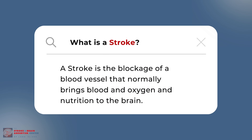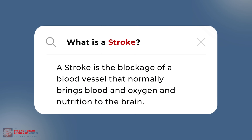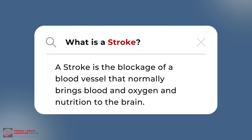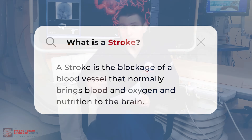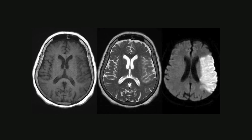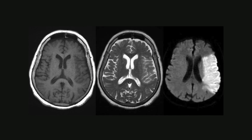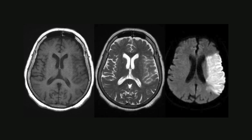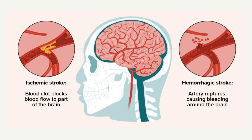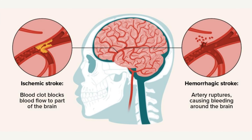A common one near and dear to our heart is stroke. What is a stroke? A stroke is the blockage of a blood vessel that normally brings blood, oxygen, and nutrition to the brain. When that is blocked, the brain tissue downstream dies, and somebody develops a deficit — weakness, numbness, inability to speak. That's the ischemic stroke. The hemorrhagic stroke is when there's bleeding in that part of the brain, causing the same symptoms.